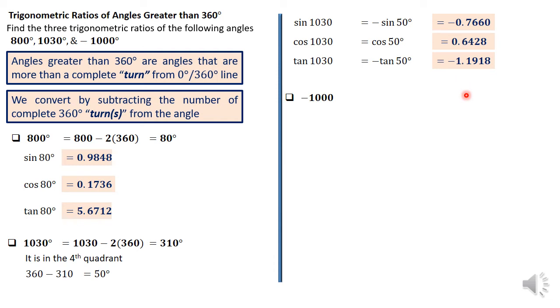We move on to negative 1,000 degrees. Now, this time around, we have a different angle. It's negative and bigger than 360, but this is how we progress. The 1,000 degrees, we're going to convert by subtracting the complete turns first of all. So, we have negative 1,000 degrees, which is an angle measured clockwise from the 0, 360 degree line.